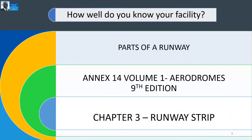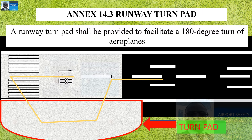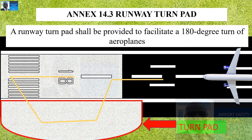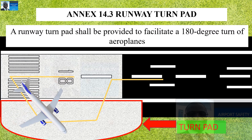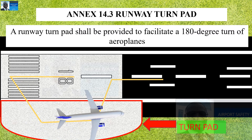We are still looking at how well you know your facility, working on the parts of a runway. We are taking our time to comprehensively understand what airport facilities are made up of. We are using Annex 14 Volume 1 Aerodromes, Ninth Edition, Chapter 3. Last week we were looking at runway end parts — if you have not watched that previous episode, I encourage you to go back and watch what the runway end part is for and what purpose it serves.